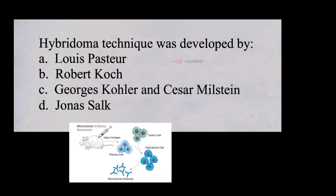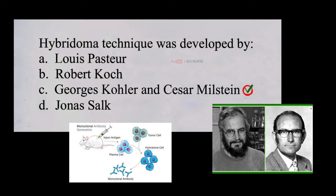Hybridoma technique was developed by A. Louis Pasteur, B. Robert Koch, C. Georges Köhler and César Milstein, D. Jonas Salk. And the correct answer is C, Georges Köhler and César Milstein. The hybridoma technique is a method used to produce large quantities of monoclonal antibodies.